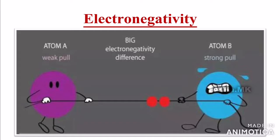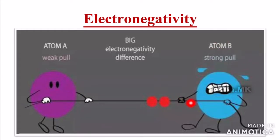Here, this is atom A — it is weak. This atom B is strong. These are two electrons — one pair of electrons. What bond? Single bonds.